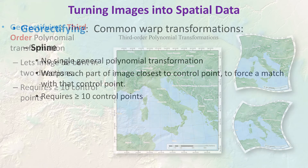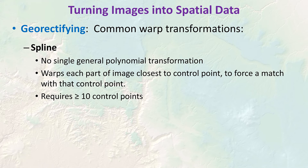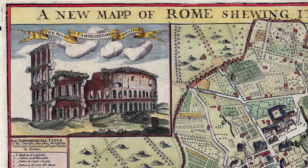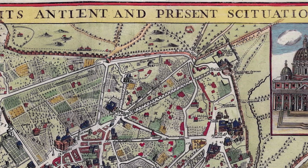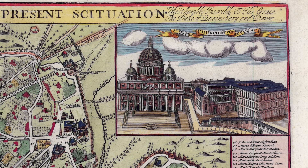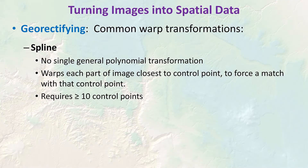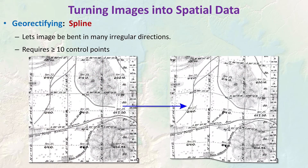Sometimes an image is more complicated, with different parts that need to be warped in different ways. You see this a lot with really old hand-drawn maps, or with aerial photo composites combined from multiple images taken from different locations. No single general polynomial transformation is ideal in this case, because one part might warp properly while the rest is skewed badly. That's where the spline transformation comes in — it warps each part of the image closest to a particular control point, forcing that local region to match. This kind of warp will cause some error throughout the image, but it's the best we can do with these kinds of images.